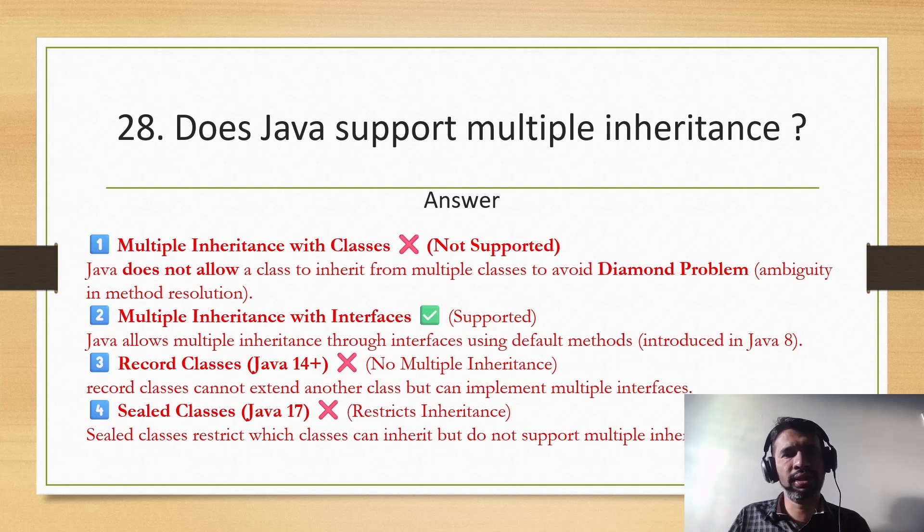A little while ago we discussed a problem where if the same method name is present in the two interfaces which a class is implementing, we discussed what are the implications. So that is a good example for multiple inheritance using interface.